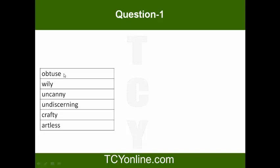Let's try it out. Obtuse can be paired with undiscerning. Similarly, wily is deceitful, guile, capable enough of cheating, faking. Wily can easily be paired with crafty. Wily and crafty is a pair, obtuse and undiscerning is a pair.